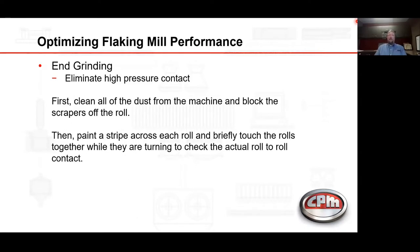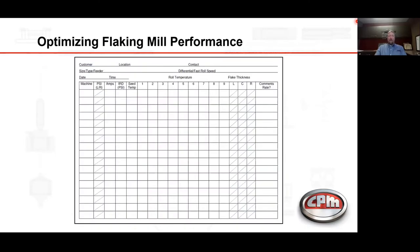For roll-end grinding, we do this to eliminate high-pressure roll-to-roll contact. First, clean off the dust and block the scrapers off the roll. Paint a stripe across the roll and briefly touch the rolls together to check for actual roll-to-roll contact. We provide a form to fill out where you note the machine, left and right pressure, amp draw from the main motor, inter-roll drive tension, crack temperature, nine temperatures across the roll, and flake thickness on the left, center, and right. Maintenance can then track over time when temperatures rise at the roll ends and flakes get thinner at the ends, indicating a need to grind.